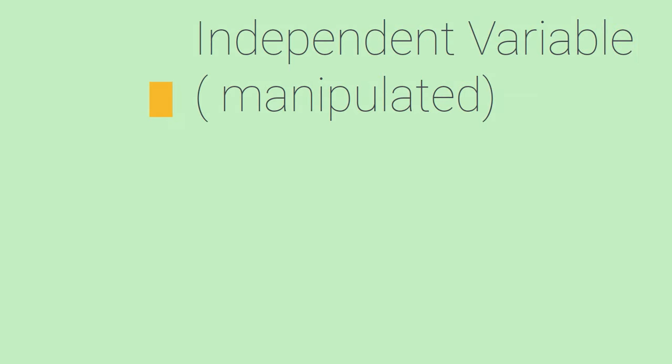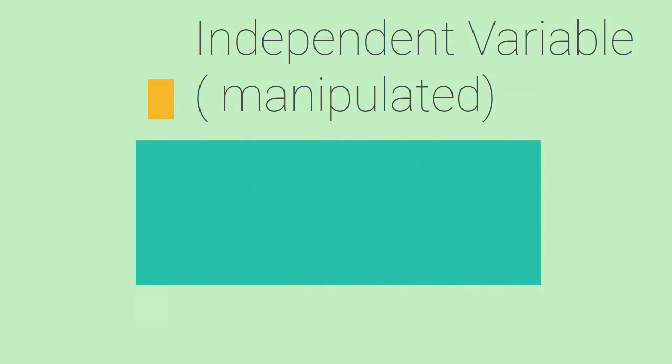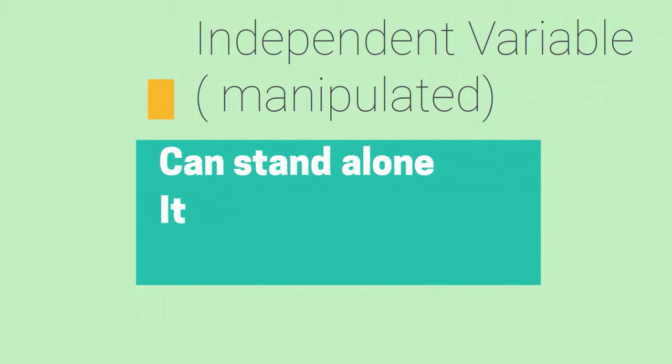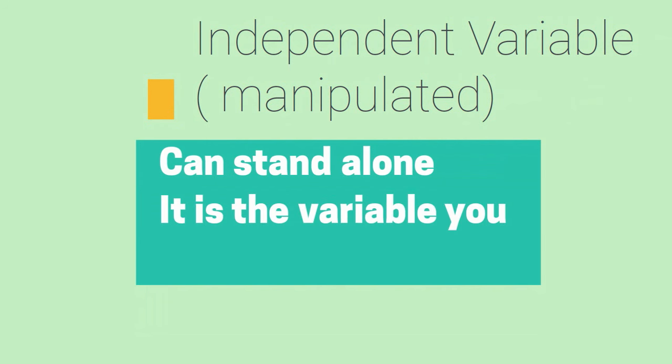An independent variable, also called the manipulated variable, has the ability to stand alone. It is not changed by the other variable. It is the variable you are changing or manipulating.